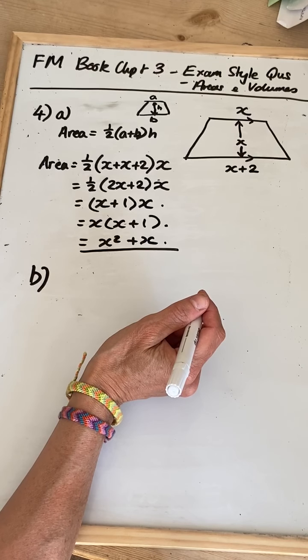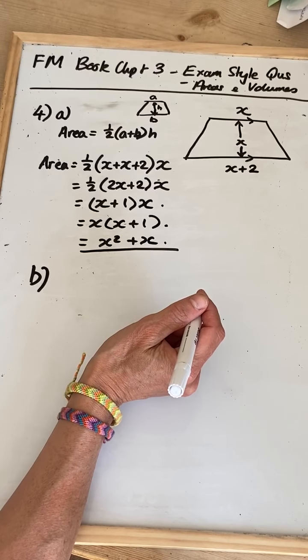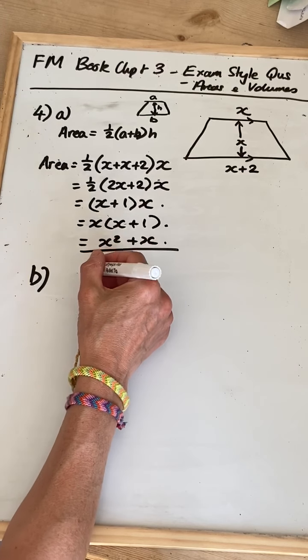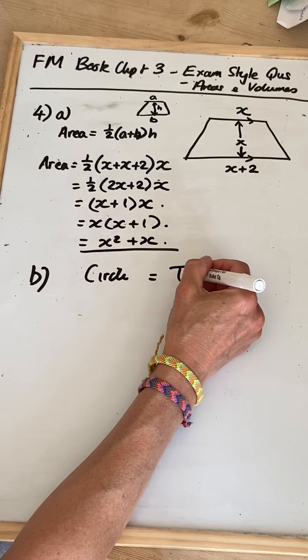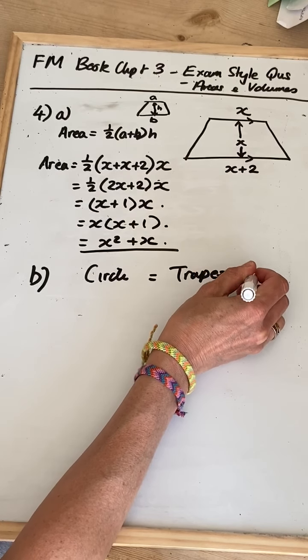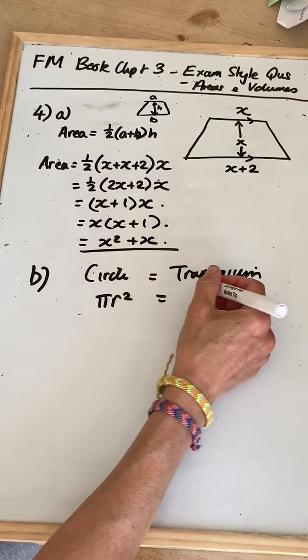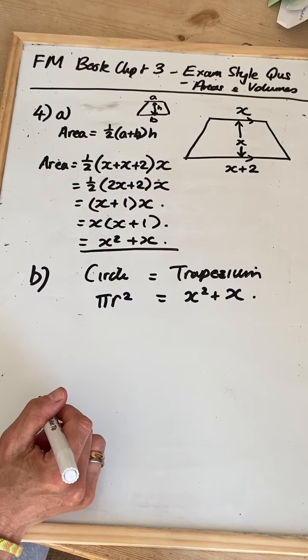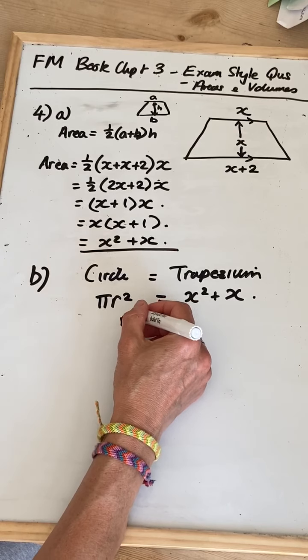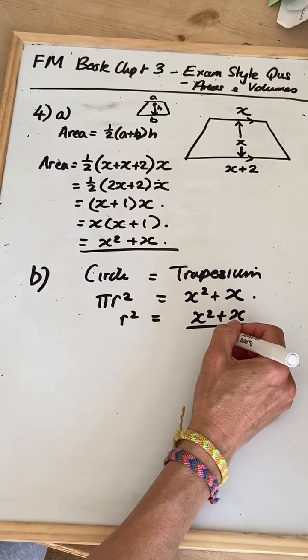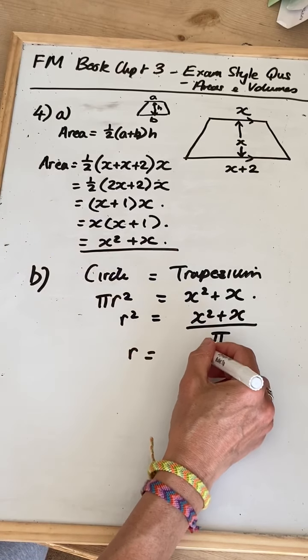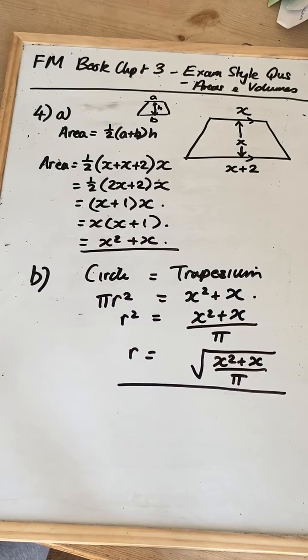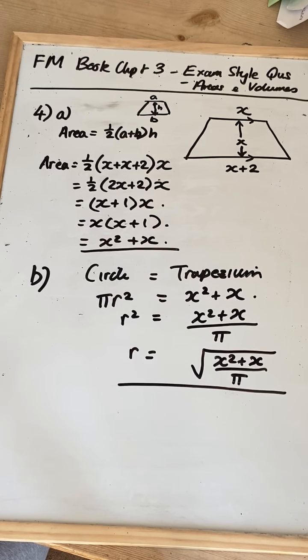And finally, a circle of radius r centimeters has the same area as the trapezium. Find an expression for r in terms of x. So circle equals trapezium. The areas of them. Area of a circle, pi r squared. Area of this trapezium, x squared plus x. We want to find an expression for r in terms of x. So divide through by pi. So you get the r squared on its own. And then you take the square root of that. And again, if you've left this in a factorized form on the top, I don't think, given the wording of the question, that they can penalize you for that.